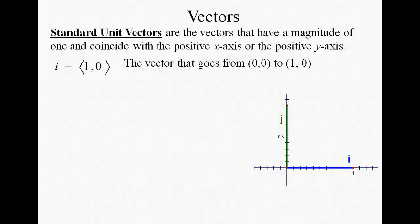Vector i, standard unit vector i, is the one that runs from (0,0) to (1,0), and j is the vector (0,1).